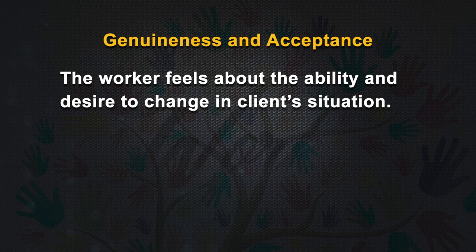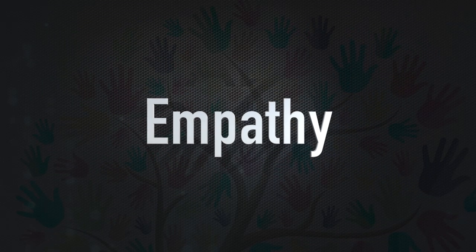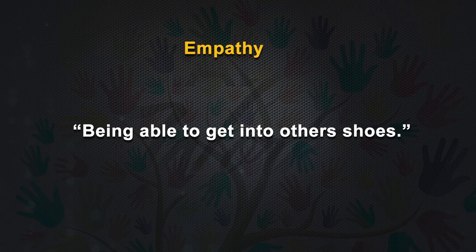Three types of expectations are seen in the worker-client relationship. The worker feels about the ability and desire to change the client's situation. The worker believes that once the client is motivated with help and support, the client can change. If there is a gap between the expectations of the worker and the client, it will disturb the professional relationship. Perlman in 1979 explains empathy as being able to get into others' shoes. Empathy implies that the worker understands the feelings of the client and is there to give support to the client.